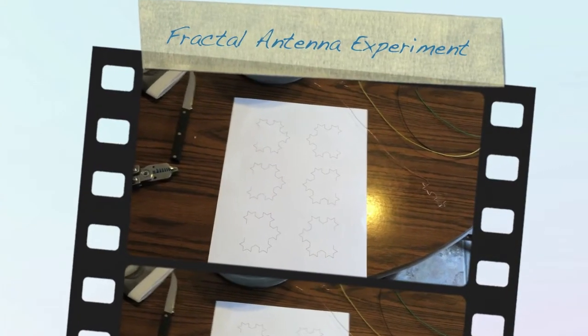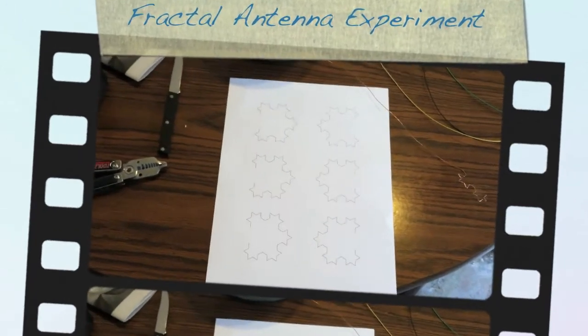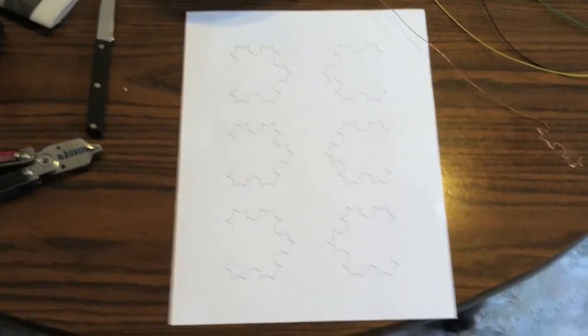Okay, so here's my plan for my fractal antenna. It's going to have six arrays on it using the Koch snowflake design.